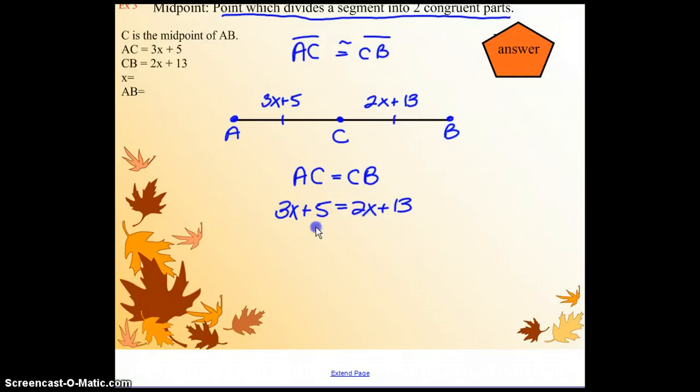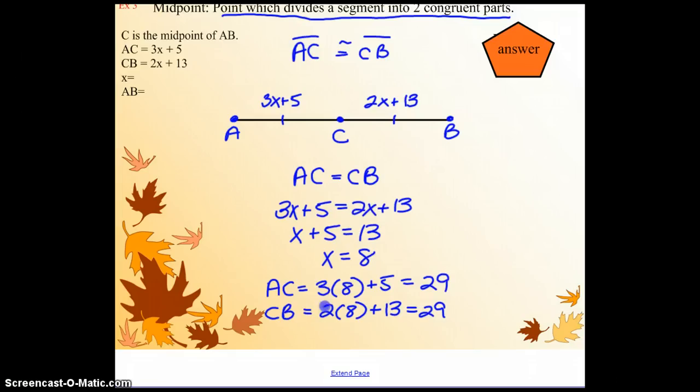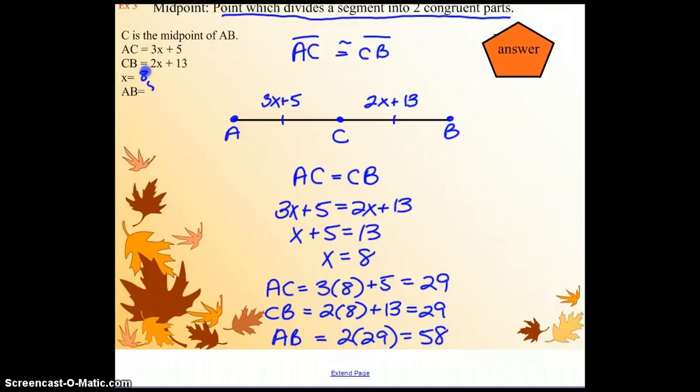Substitution. We'll subtract 2X to the other side, and then we will subtract the 5 to the other side. Feel free to do a couple steps at once if you would like. So we get that X is 8. And again, for good measure, we need to double check everything. By substitution, AC is 29. If we did this correctly, CB is also going to be 29. And the length of AB is going to be 2 times 29, which is 58. So we have 8 and 58.